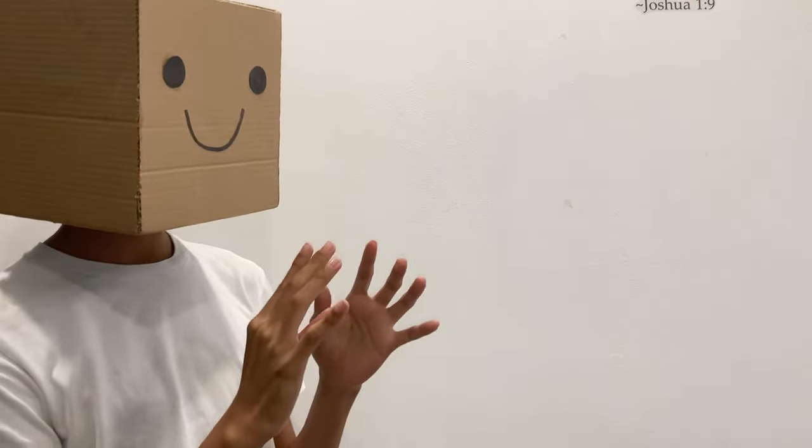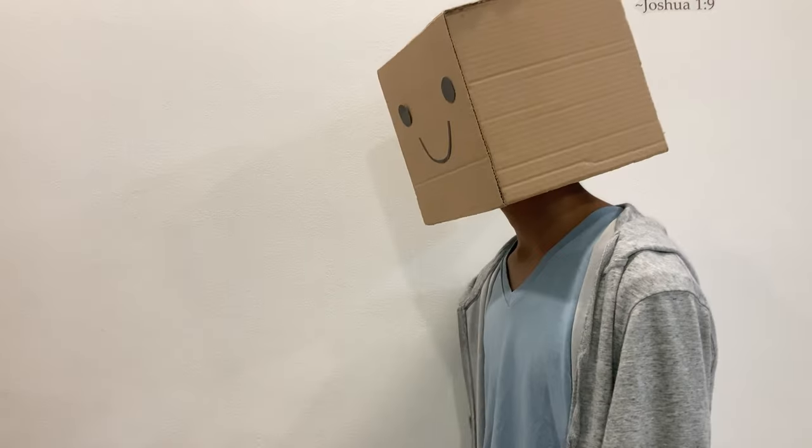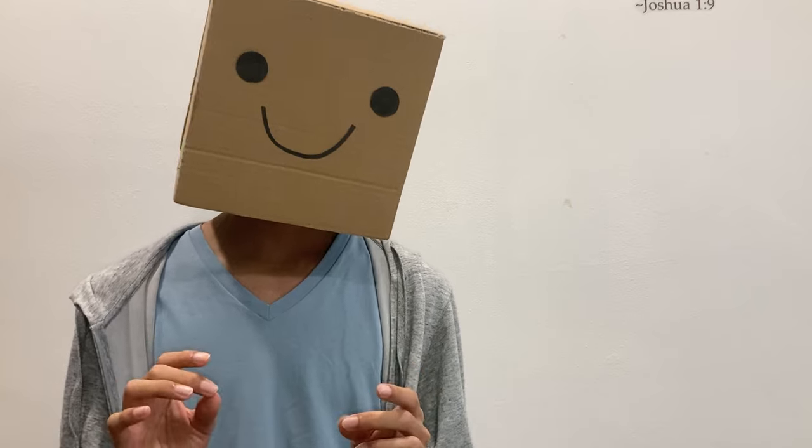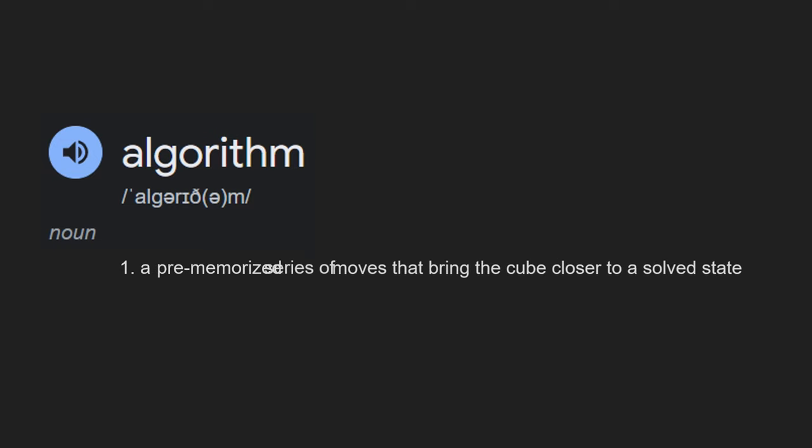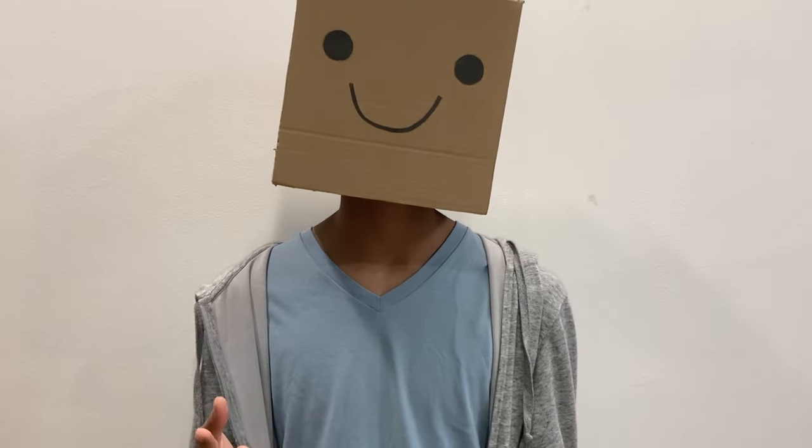Sorry to interrupt the video, but I find the thought of a single move being an algorithm to be absolute nonsense. Alright look, I get that it can be quite hard to see a U2 as a single algorithm, but if you look at the definition that we set earlier, it kind of matches up. A U2 in the case of big blind parity is actually a pre-memorized move that brings the cube closer to a solved state. So if you agree with that definition, a U2 is in fact an algorithm. And with this knowledge, because I love short algorithms, I can finally say that I love U2.